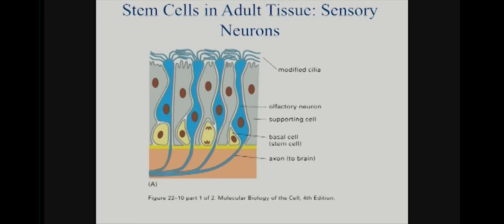Different neural tissues do have stem cells. Your olfactory epithelium — believe it or not — has stem cells. They're a little bit protected, away from the olfactory epithelial lining, and they can give rise to either the support cells or the olfactory neurons. When those neurons are born, they start sending their axons down to find their way to the olfactory processing regions.